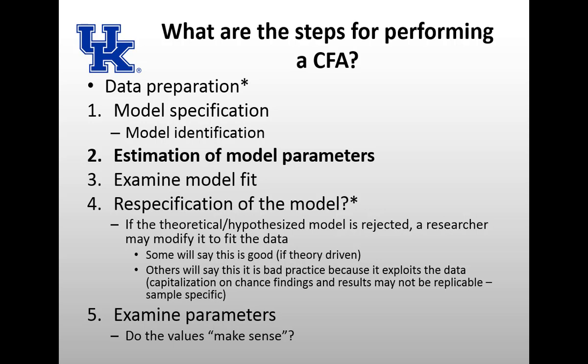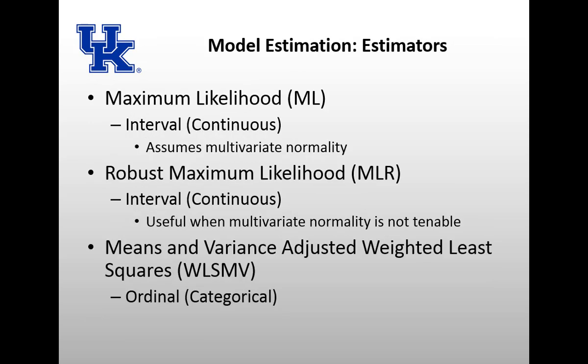Next is estimation of model parameters. You decide which estimator to use based on the type of data you have. If you have continuous data, use maximum likelihood assuming multivariate normality. For continuous data when multivariate normality is not tenable, use robust maximum likelihood, or MLR. Use WLSMV — mean and variance-adjusted weighted least squares — if you have ordinal data. In our case, we use WLSMV because we have categorical data on a Likert-type scale, and it can also be used with dichotomous data.